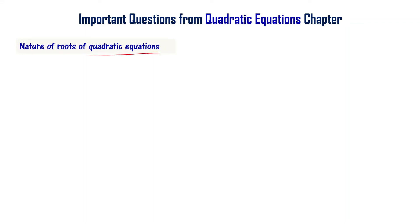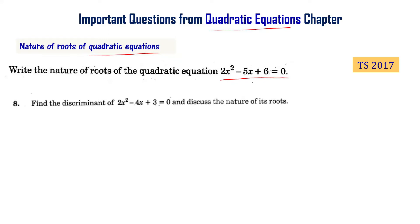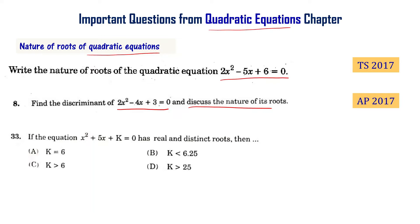The nature of roots of quadratic equations is one of the important topics from the quadratic equations chapter. Write the nature of the roots of quadratic equation 2x² - 5x + 6 = 0 (Telangana final exam 2017). Find the discriminant of 2x² - 4x + 3 = 0 and discuss the nature of its roots (AP final exam 2017). If the equation x² + 5x + k = 0 has real and distinct roots, then what is the value of k?